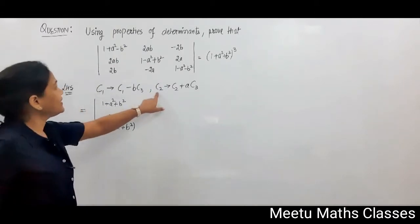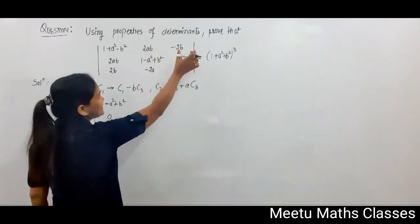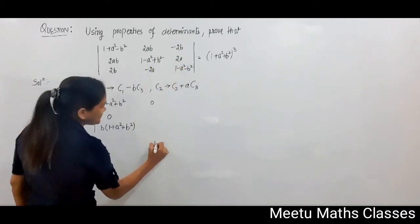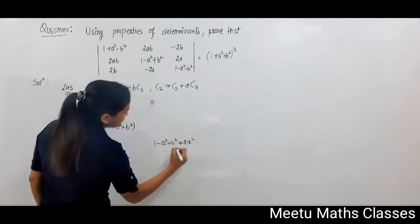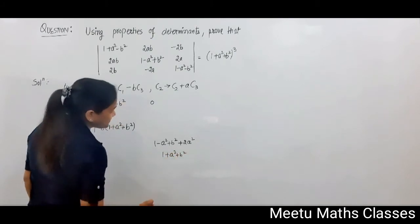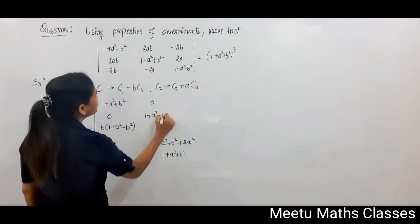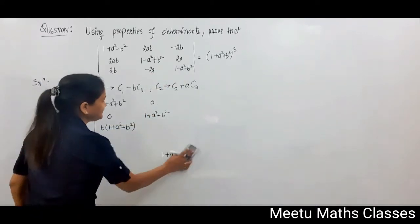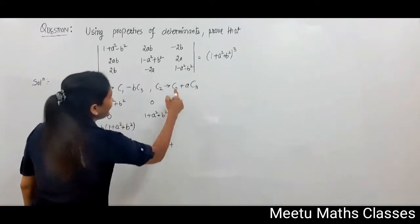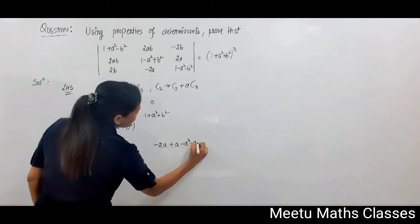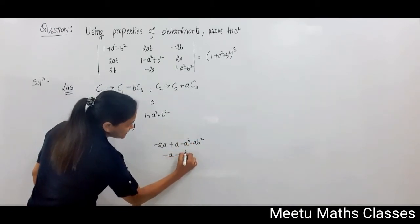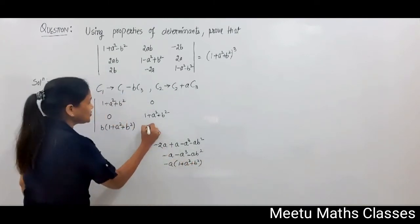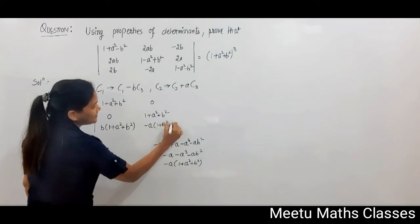Now for the C2 operation: in C2, multiply C3 by a and add it. It will become 0. If you add a times this entry, then multiplying by a and adding gives directly (1 + a² + b²). And for the third row, if you add a times this — that means a minus a³ minus ab² — then it will become minus a minus a³ minus ab², and taking minus a common gives (1 + a² + b²).